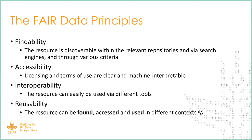These are mainly the dimensions that FAIR data principles introduce: Findability, so as to make a resource discoverable; Accessibility, which talks about the licensing and terms of use of specific data; Interoperability, which means that the resource should be easily used via different tooling; and the fourth one, Reusability, which means that the resource can be found, accessed, and used in different contexts. Reusability is really important because it is the ultimate goal, yet it is the most difficult dimension for a machine to interpret and is highly dependent on the other three dimensions.